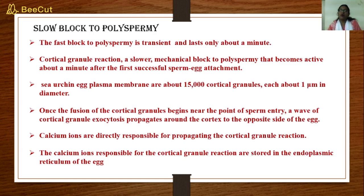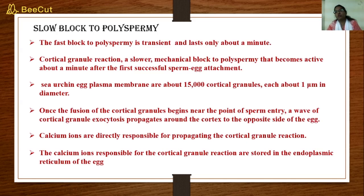The key player bringing about the cortical granule reaction is calcium. Instead of calling it a wave of cortical granule reaction, we call it the wave of calcium ions. The release of calcium ions starts from the point of sperm entry and moves toward the opposite side.